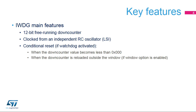The IWDG features a 12-bit free-running down-counter. It is clocked by an independent Low-Speed Internal RC Oscillator at 32 kHz. When the IWDG is activated, a reset is generated if the down-counter reaches zero, or when the down-counter is reloaded outside the window if this option is enabled.